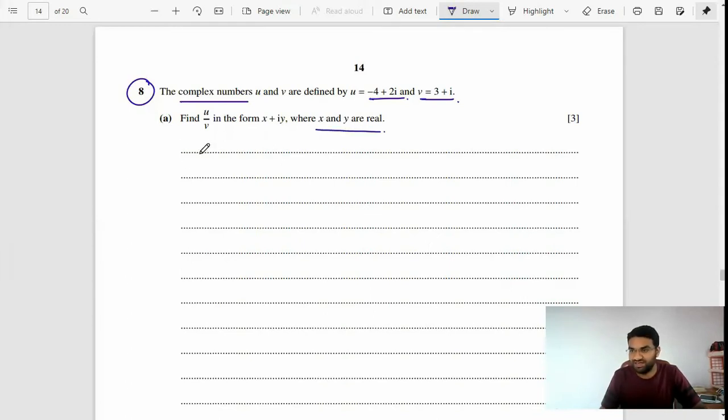Here you have to take the division and simplification of the denominator. So u over v will be negative 4 plus 2i upon 3 plus i. To simplify this denominator, multiply by 3 minus i in the numerator and denominator.